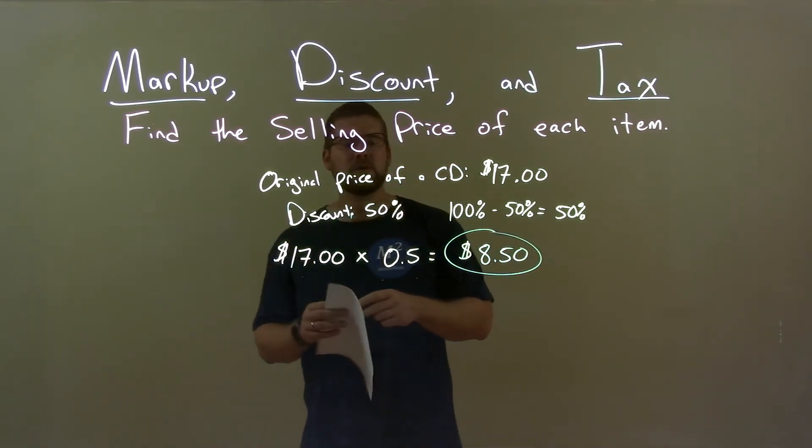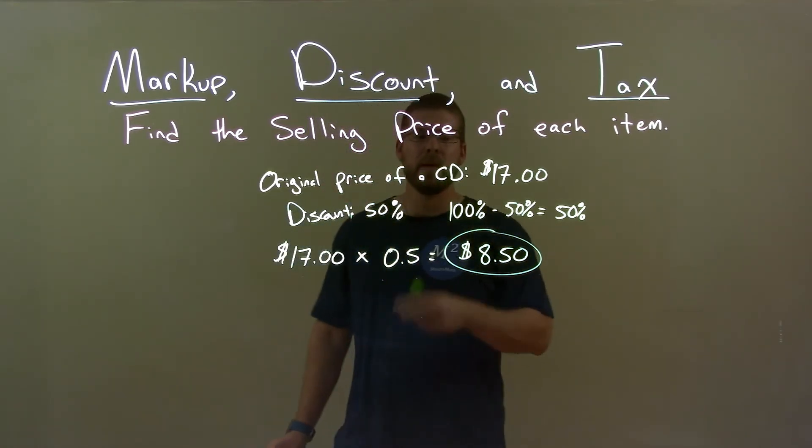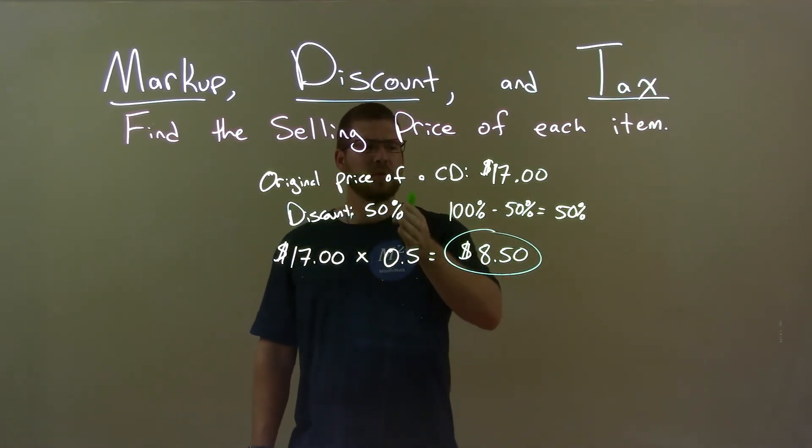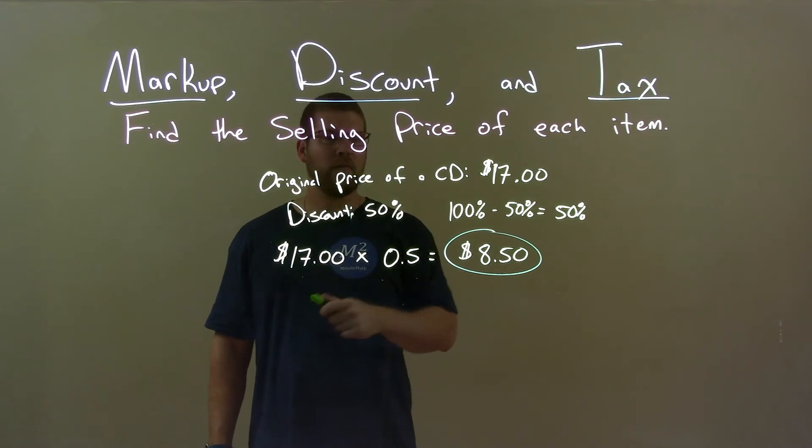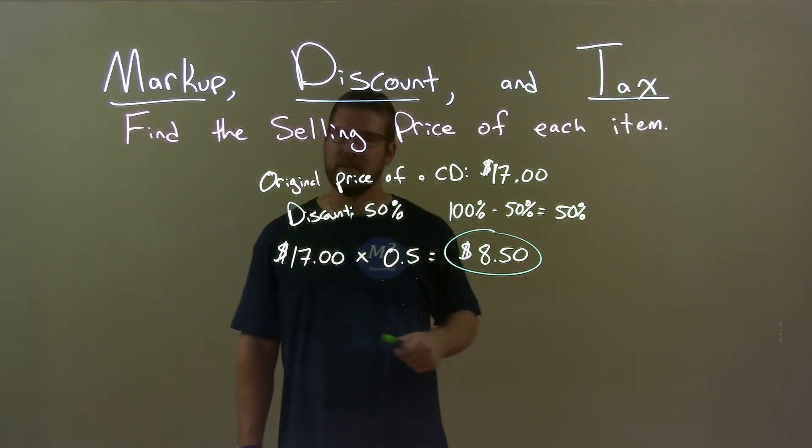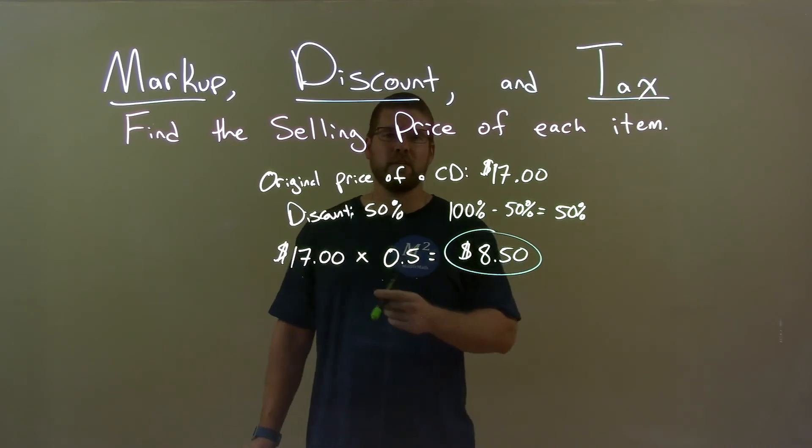So quick recap: we're given the original price of a CD is $17, and the discount is 50%. To calculate what percent of the original price we pay, we take 100 minus 50, and that's 50%. That as a decimal is 0.5, we multiply that by the original price, $17, and that gives us a discounted final price of $8.50.